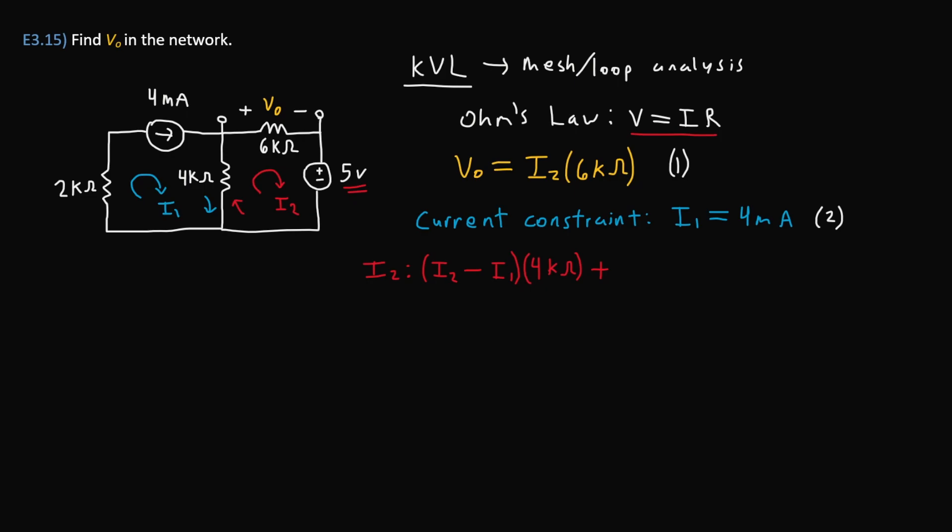Now moving along the loop, we reach V₀, or the 6 kilo ohm resistor. We already have an expression for V₀, which is our equation one. That's just I₂ times the resistance 6 kilo ohms, so we simply add that to our previous expression.